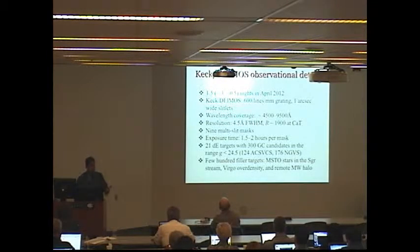So the apparent brightness of a globular cluster is about the same as an individual star in the halo of the Milky Way. We will come to colors in a minute and we will come to other aspects that can help distinguish between these two populations. But we deliberately put foreground stars on our mask because we had room on the slit mask. We have a few hundred filler targets, main sequence turn-off stars in the halo of the Milky Way.